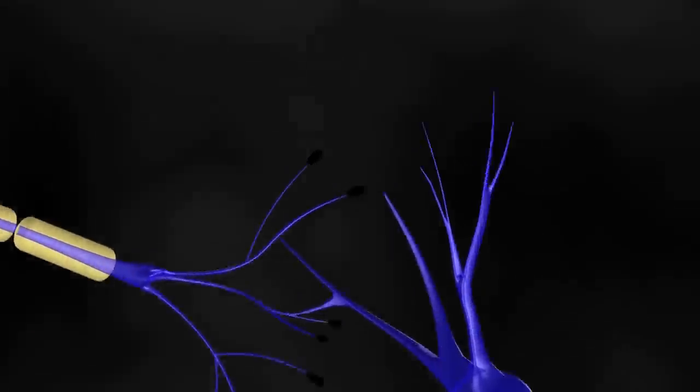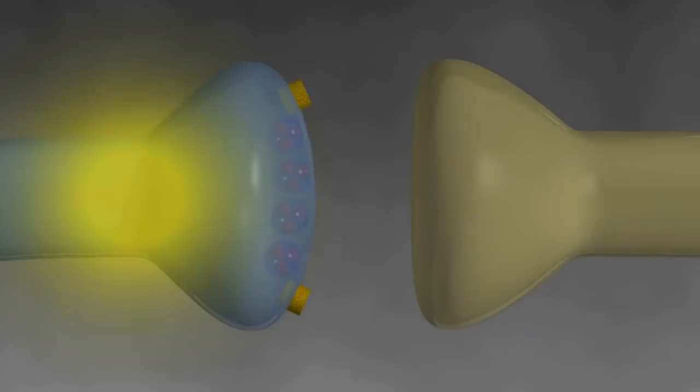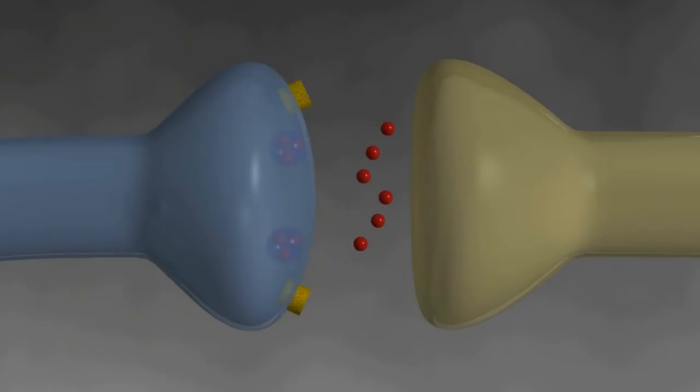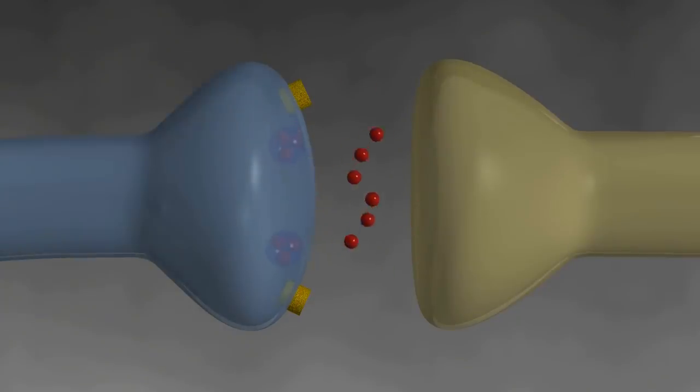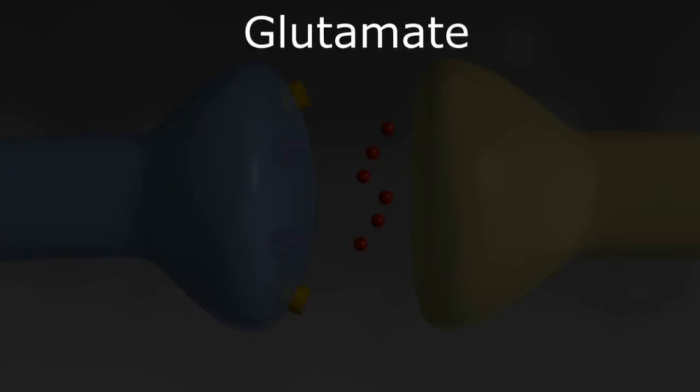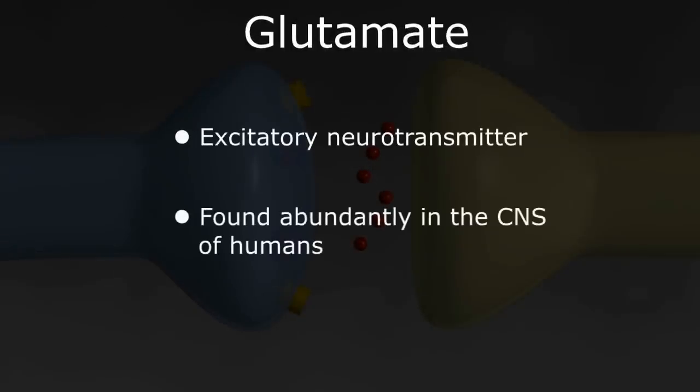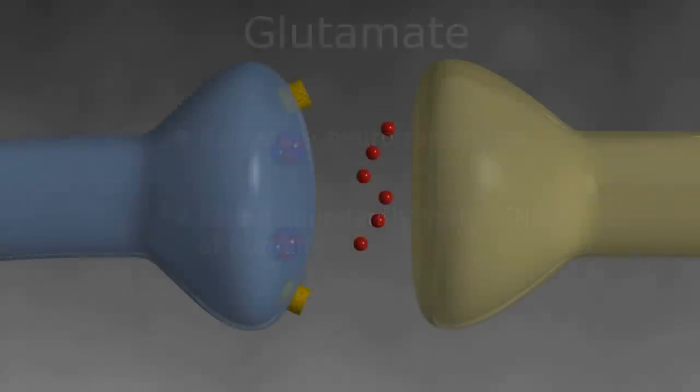The electric impulse causes small vesicles in the axon tips to degranulate or open up, releasing chemical neurotransmitters in the synapse, which subsequently bind to receptors on the dendrite of the next cell. There are many different neurotransmitters with various inhibitory and excitatory functions, but for the purposes of our ivermectin discussion, we will focus on glutamate. Glutamate is predominantly an excitatory transmitter found abundantly in the central nervous system of humans. When glutamate binds to the postsynaptic receptor of the dendrite, it causes the cell to depolarize, propagating the electric impulse to the next neuron.